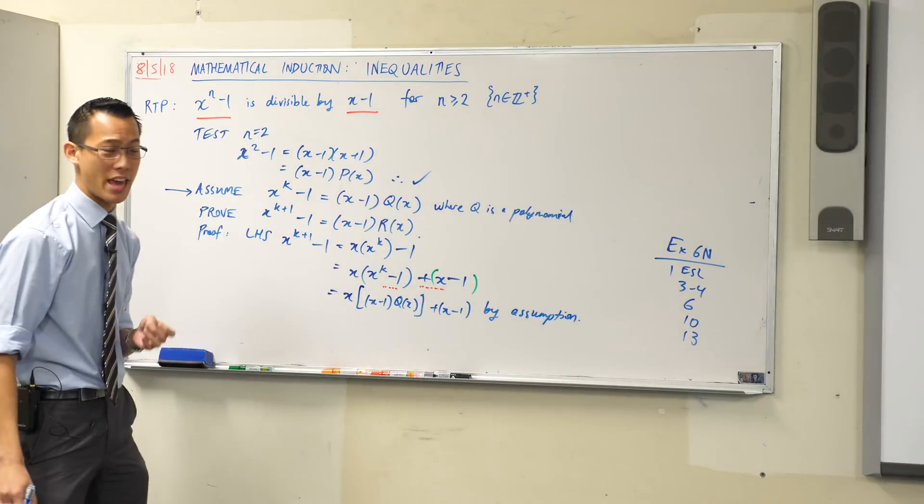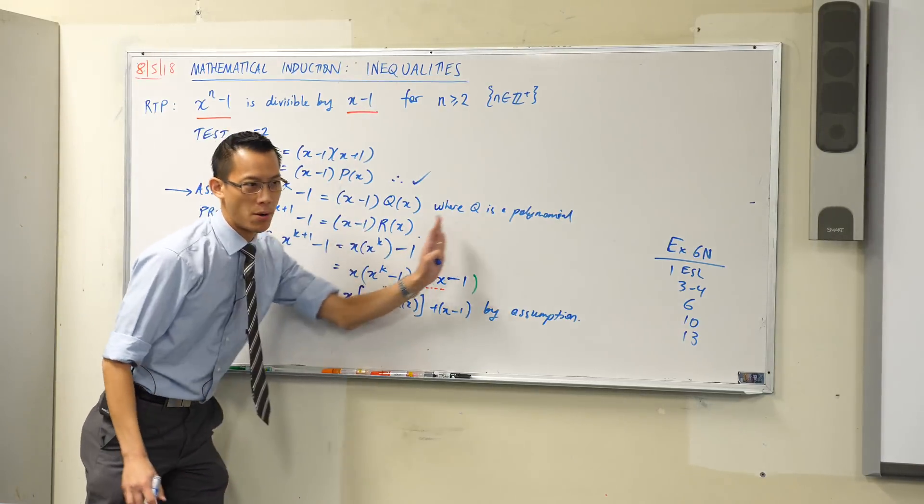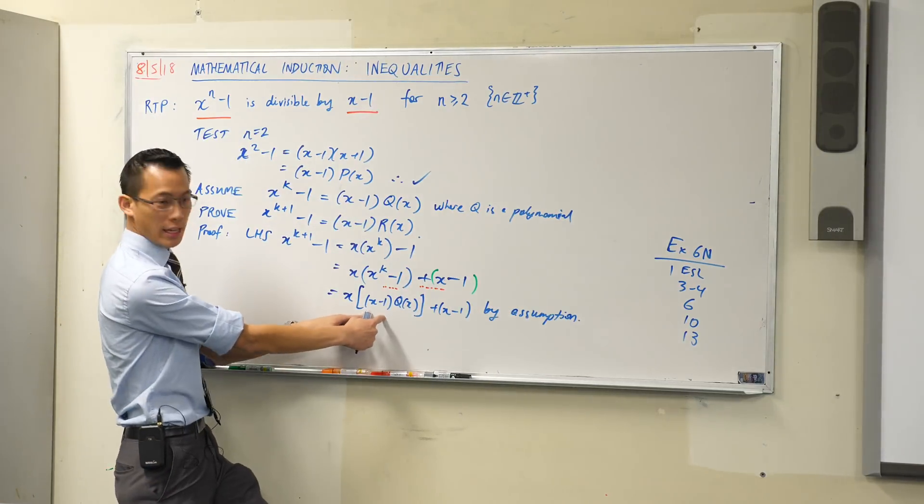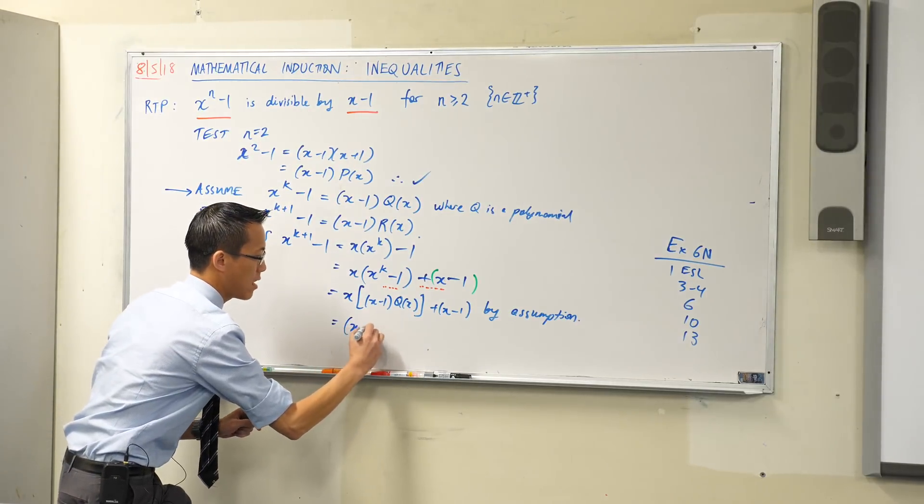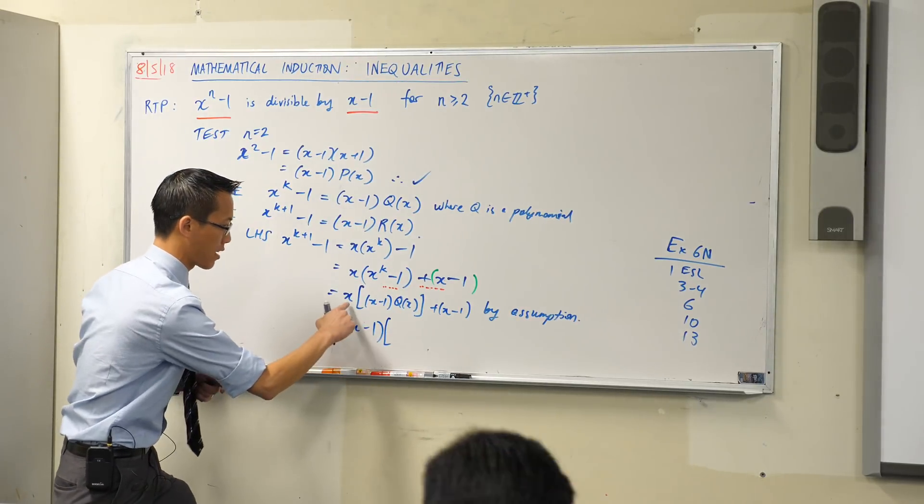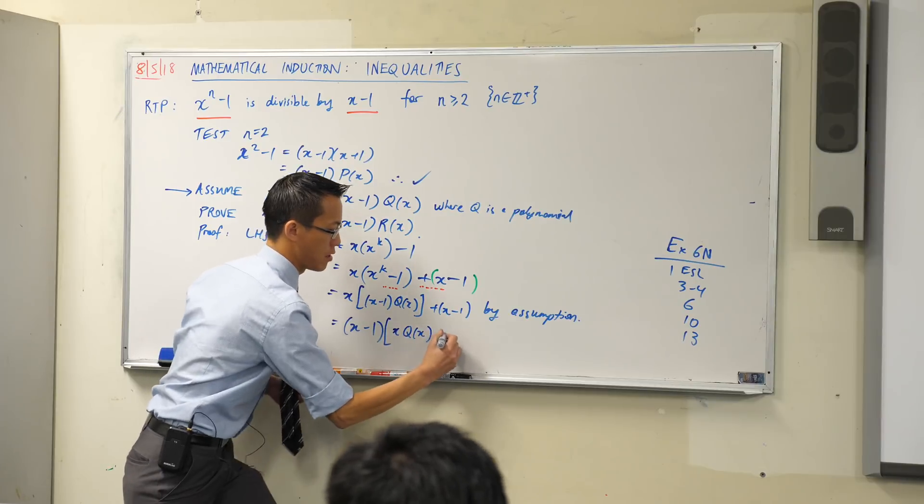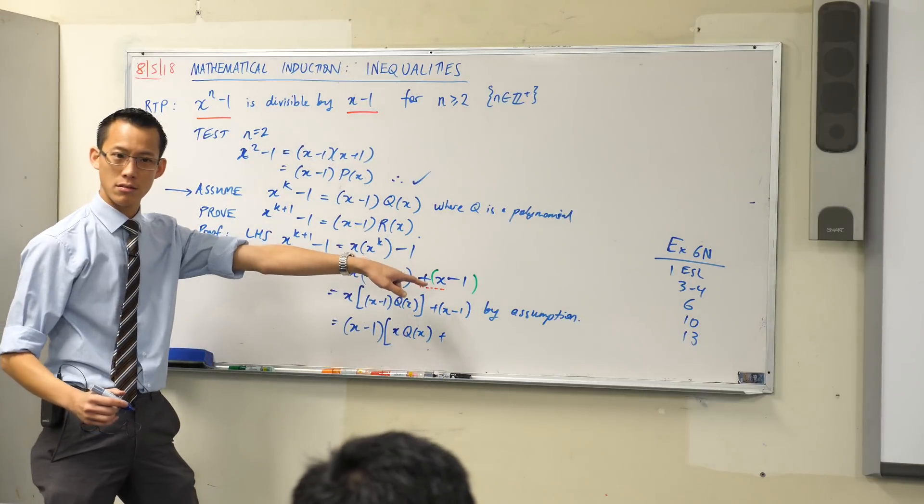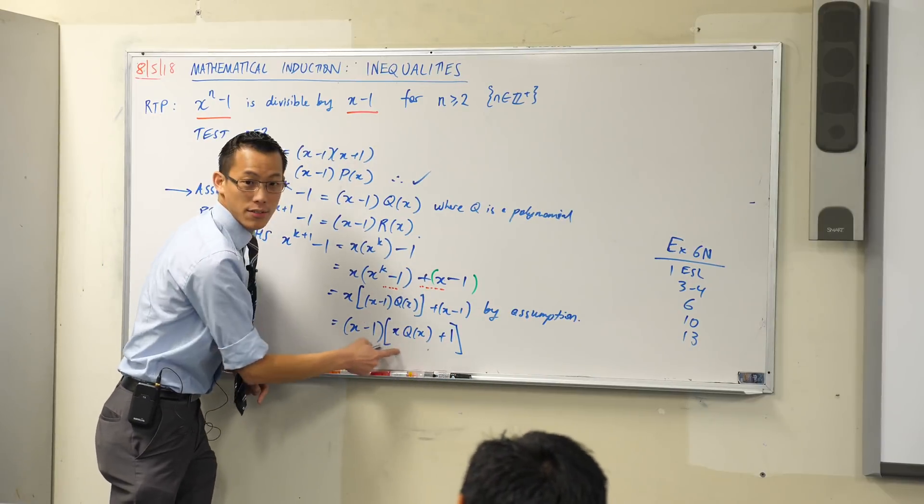So I'm going to say that my assumption is that this thing is writable in this form. x minus 1 times a polynomial. By assumption. I'm pretty much there, right? What I want to end up with is x minus 1 times a polynomial, and I can see there's an x minus 1 here, and an x minus 1 there. So I can take that out as a common factor. What does it leave me with on the inside? It looks like I've got x times q of x, whatever that happens to be, plus what's left over on the end? Just a 1.